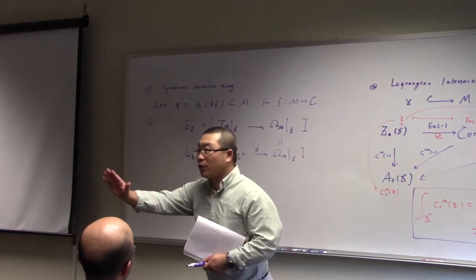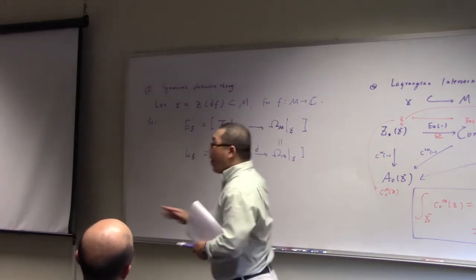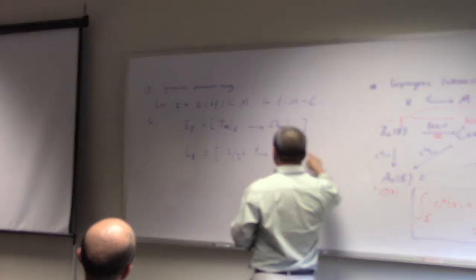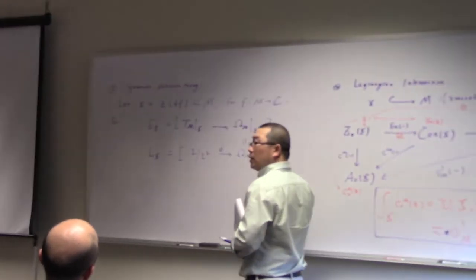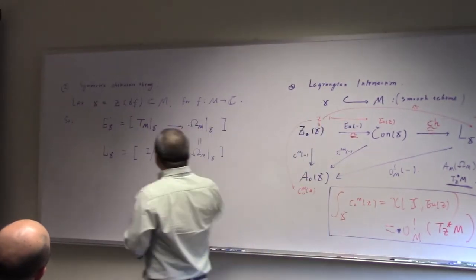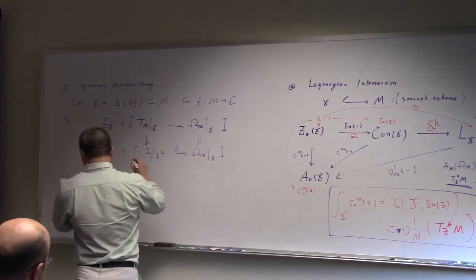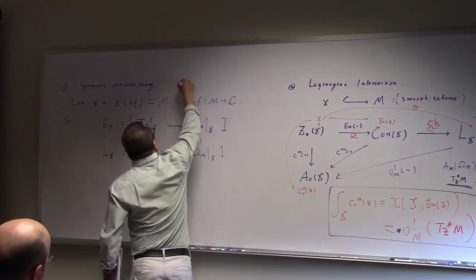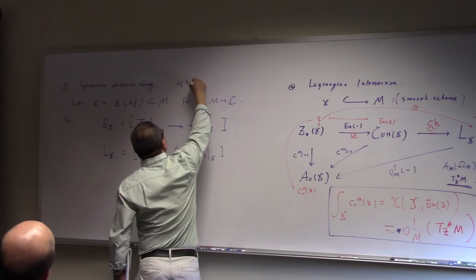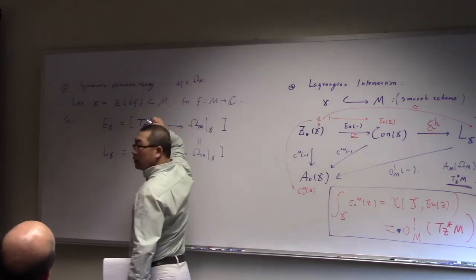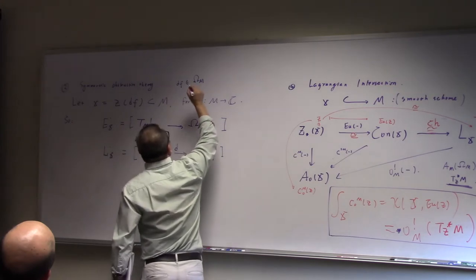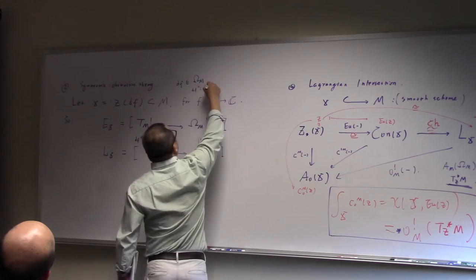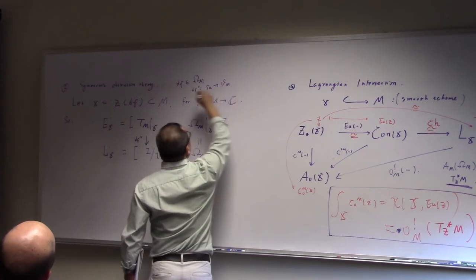This is a truncated cotangent complex. In general, the cotangent complex has infinitely many terms — all in minus degrees. So the cotangent complex gives you a resolution of the cotangent sheaf of X. So here, the cotangent will be the cotangent complex. Then this will be df₂, because df as a function gives you a section of Ω_M. And then you take a ², going to the ideal sheaf. You take df₂, going to the ² of this, to the Ω of M, and that goes to the ideal sheaf of X.